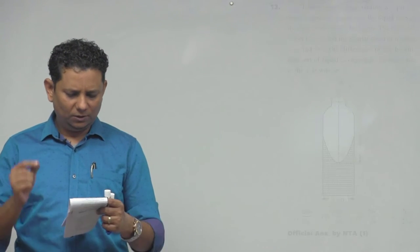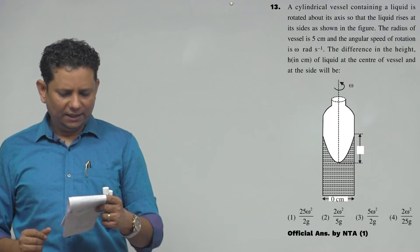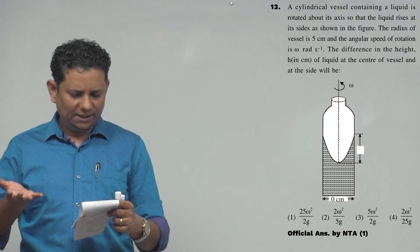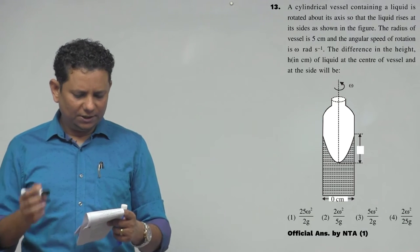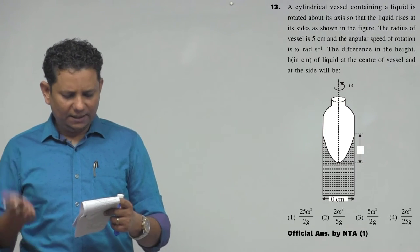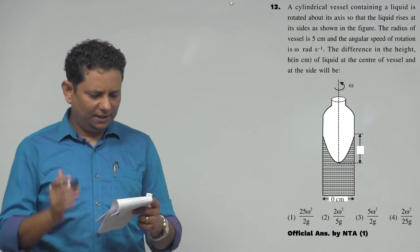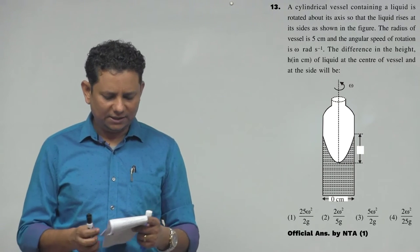Next question: A cylindrical vessel containing a liquid is rotated about its axis so that the liquid rises at its sides as shown in the figure. The radius of the vessel is 5 cm and angular speed of rotation is ω radians per second. The question asks for the difference in height in cm of liquid at the center of vessel and at the side.